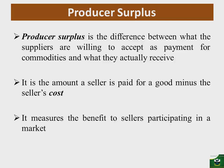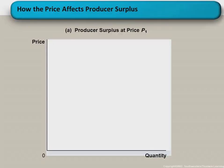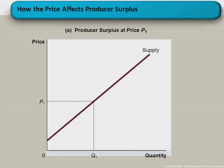Producer surplus is a measure of the benefits which accrue to the sellers for participating in the market. With price on the vertical axis and quantity on the horizontal axis, and recalling from the law of supply that the supply curve is upward sloping — if we have price P1 and quantity Q1, with areas defining points A, B, and C forming a triangle, the difference between the supply curve and the price line gives us the producer surplus. Area ABC is the producer surplus.